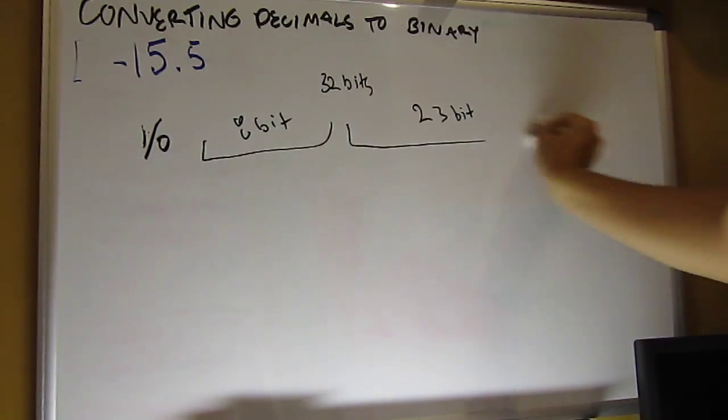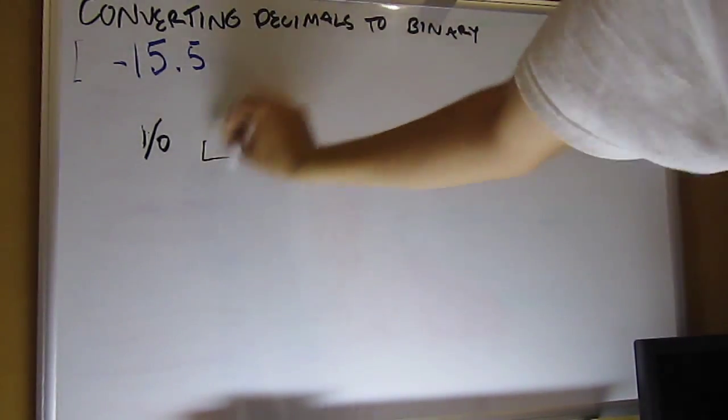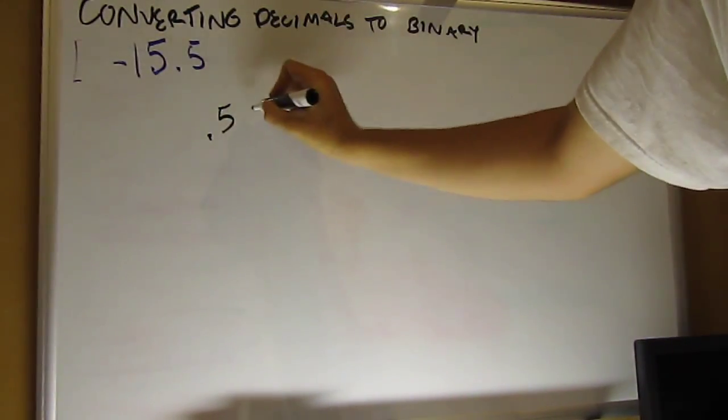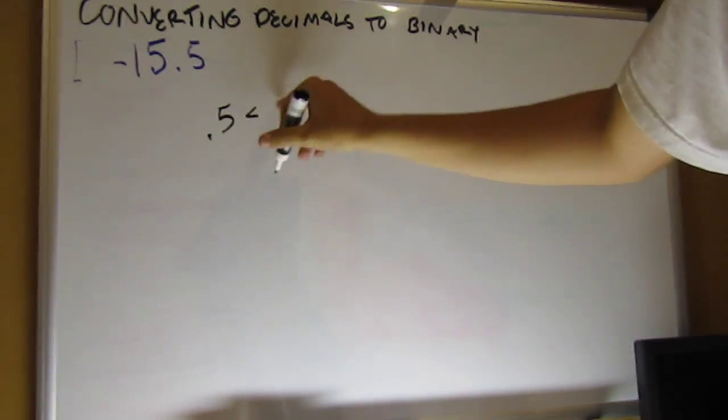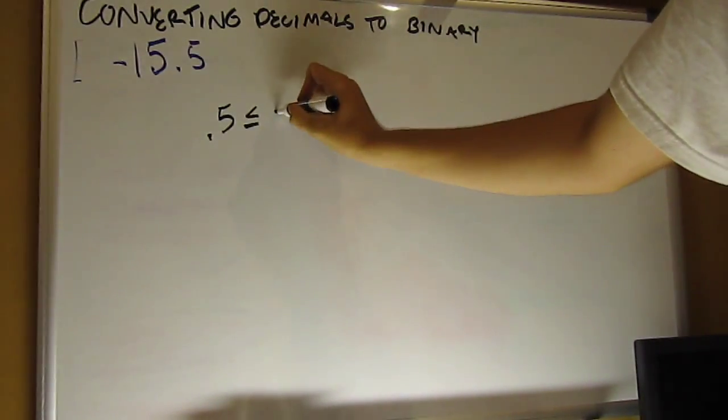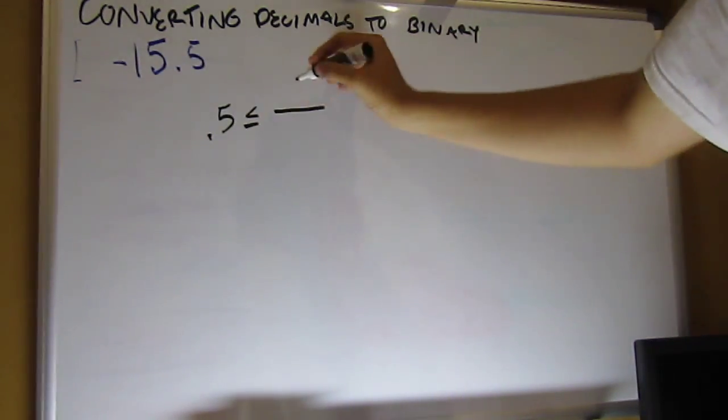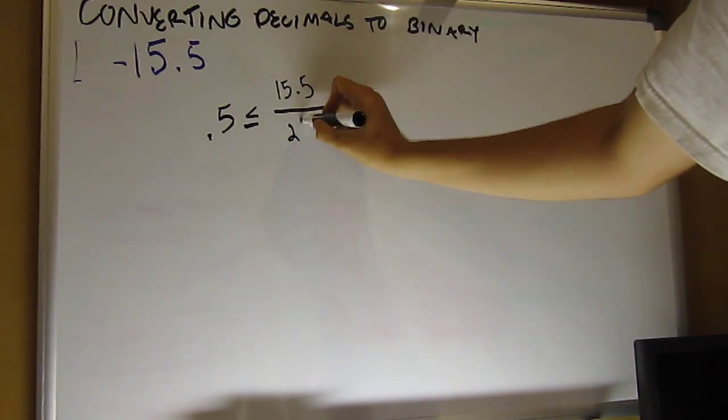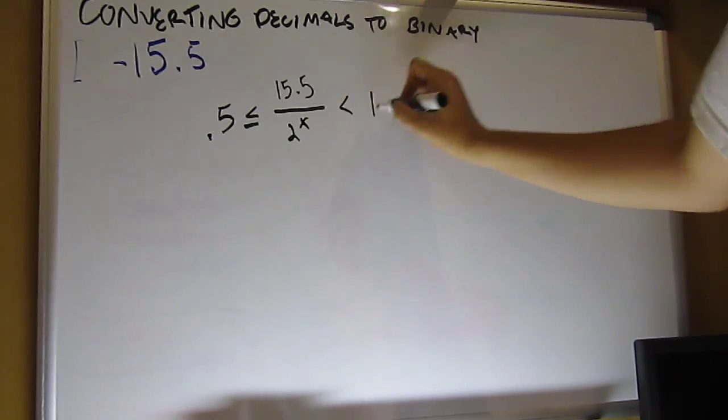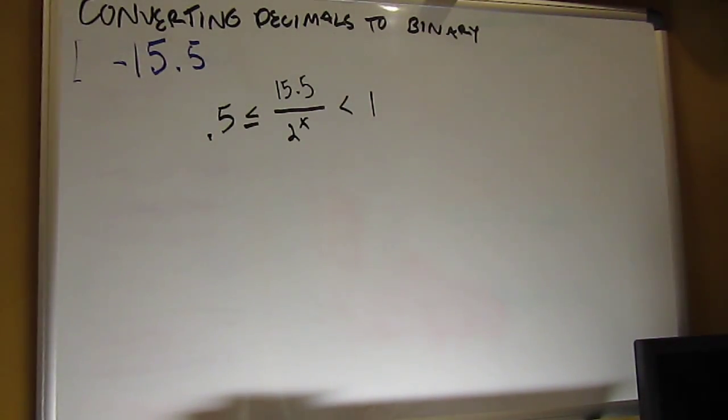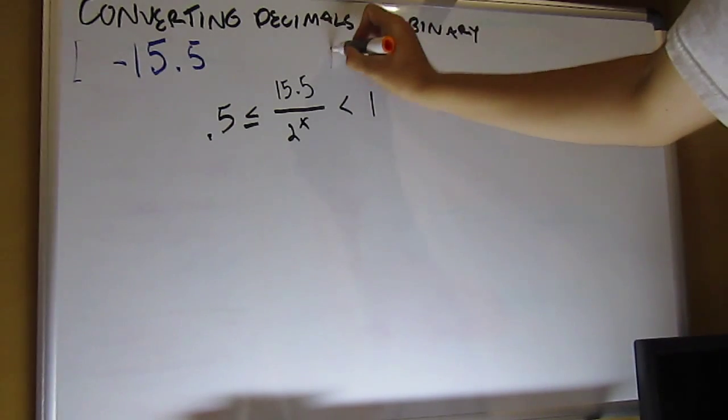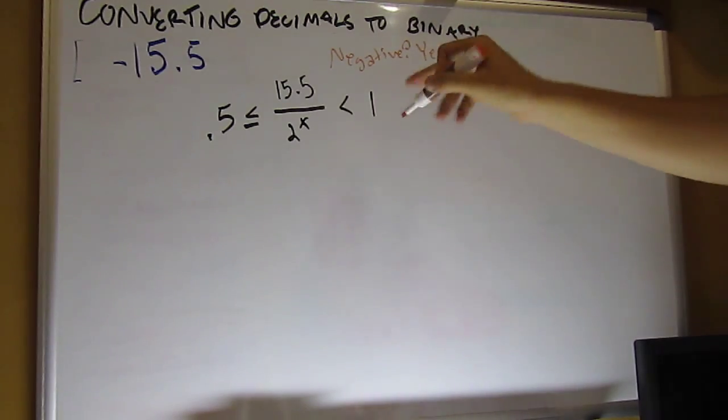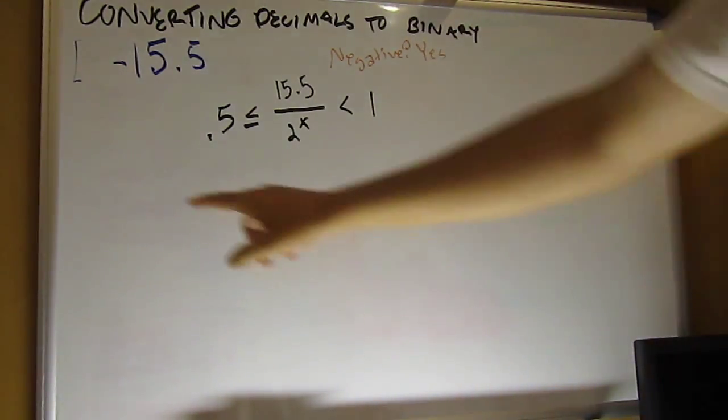So let me just erase this. Alright, so now we have our formula here. 0.5 has to be, the answer has to be greater than or equal to 0.5. We take 15.5, drop the negative sign, put it over 2 to the x-th power, and it has to be less than 1. So that's our formula. Now this negative sign, we can just make like a little test here. Negative, yes. And we just have to make sure we drop that sign bit in the first place.